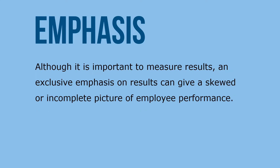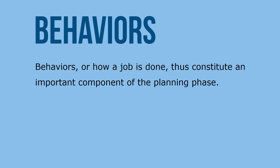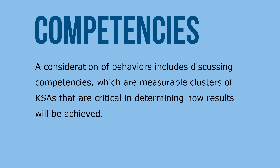Although it is important to measure results, an exclusive emphasis on results can give a skewed or incomplete picture of employee performance. Behaviors, or how the job is done, thus constitute an important component of the planning phase. A consideration of behaviors includes discussing competencies, which are measurable clusters of KSAs that are critical in determining how results will be achieved.